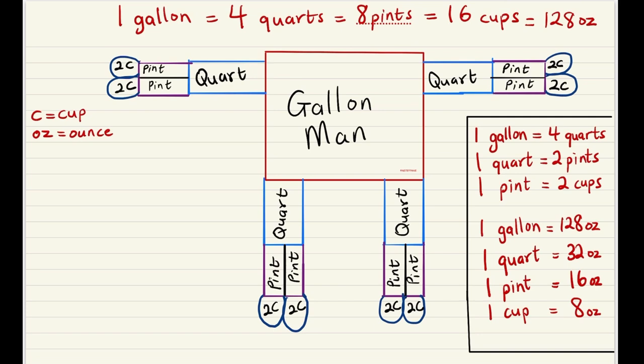We're going to count the number of cups. It's two cups per pint, so that means in every pint there are two cups. So 2, 4, 6, 8, 10, 12, 14, 16. So in each gallon there are 16 cups.